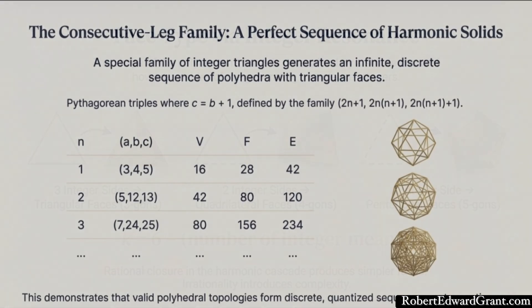Let's talk about a concrete consequence. Let's focus on what the sources call the consecutive leg family. This is a special infinite sequence of Pythagorean triples. The rule is that the middle leg B and the hypotenuse C are consecutive integers, separated by exactly 1. Like 4 and 5 or 12 and 13. Because of how they're constructed, these triples always have 3 integer sides. Which means they have to generate solids with triangular faces.